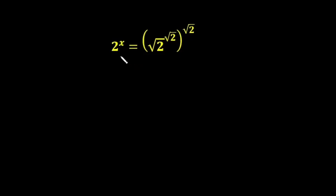Hello friends, welcome to my channel. In this video I am going to solve this given radical equation: 2 raised to the power x is equal to 2 under root raised to the power 2 under root raised to the power 2 under root. We have to solve the value of x. When I see the right-hand side of this equation, there is 2 under root raised to the power 2 under root raised to the power 2 under root.